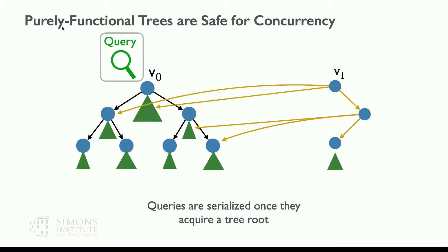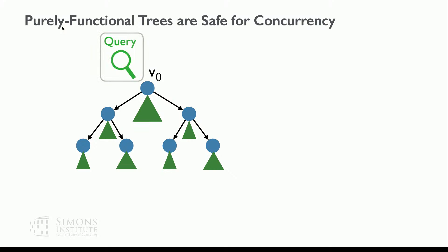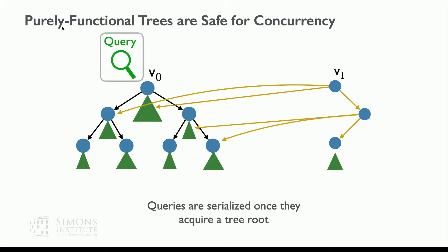Question about the relationship between purely functional and persistent data structures. Purely functional data structures are persistent data structures, but there are other types of persistent data structures that use version lists and other techniques for achieving persistence that are different from path copying.